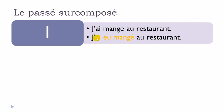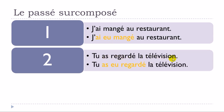Second example: passé composé — tu as regardé la télévision — avoir at the present tense plus the participe passé regardé. For the passé surcomposé: tu as eu regardé la télévision. The regardé form stays exactly the same. It is the first part that changes: for the passé composé you have avoir at the present, and for the passé surcomposé you have avoir at the passé composé form.